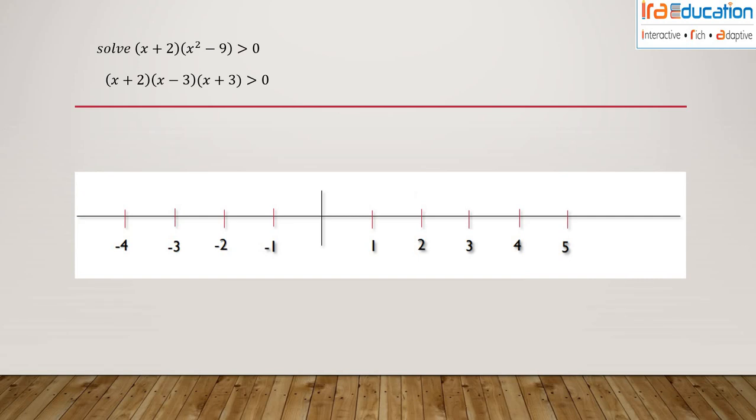This becomes (x + 2)(x - 3)(x + 3) > 0. As discussed earlier, if I equate this inequality to 0, the roots obtained are -2, +3, and -3.